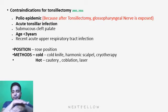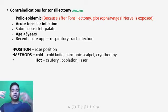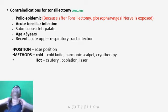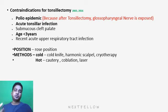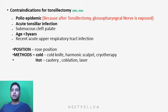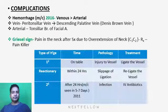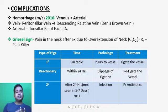The position for tonsillectomy is the Rose position — the patient is placed supine with a shoulder bag beneath the shoulders to extend the neck. Methods include cold methods such as knife dissection, harmonic scalpel, or cryotherapy, and hot methods such as cautery, laser, or coblation, which is widely available in modern hospitals.